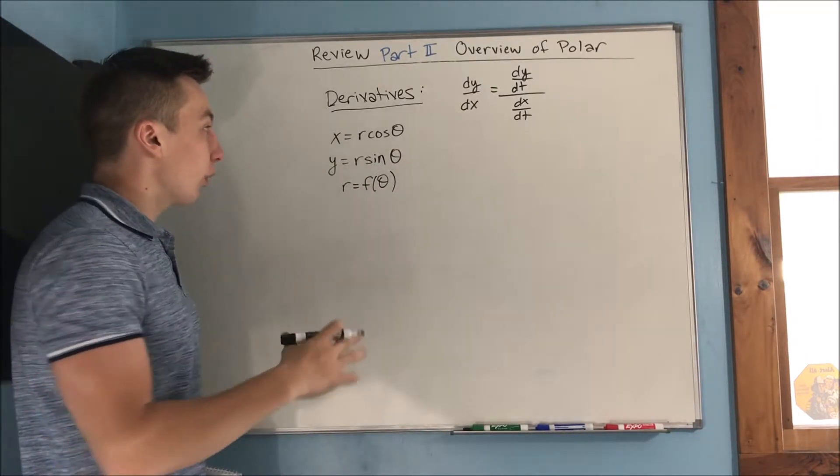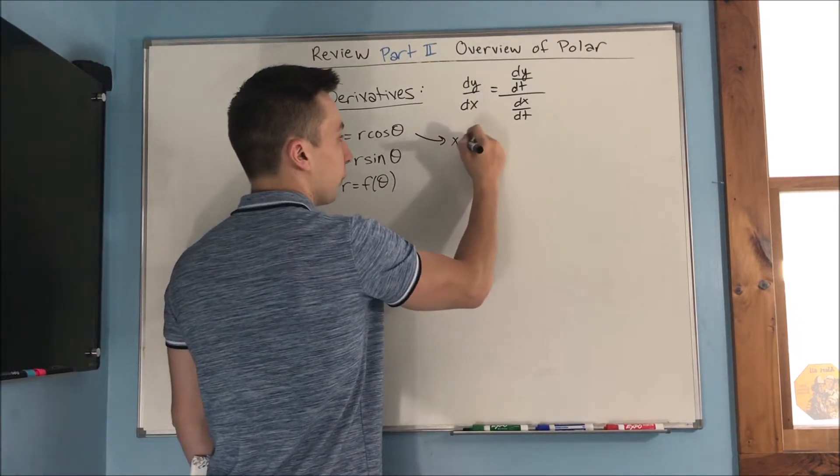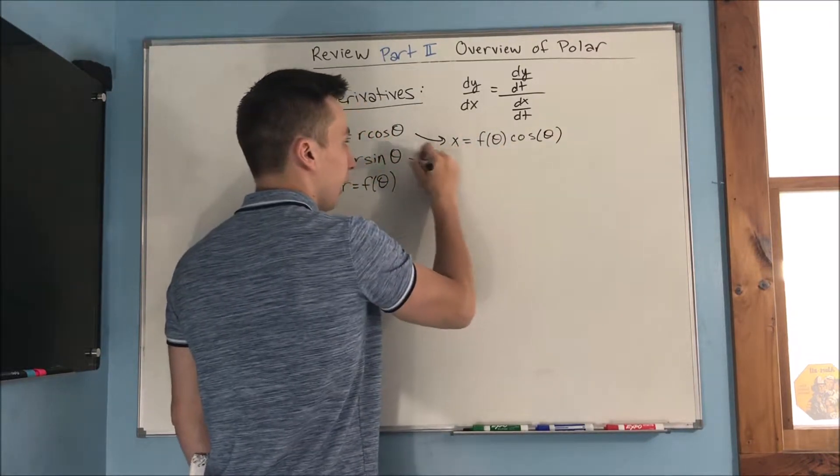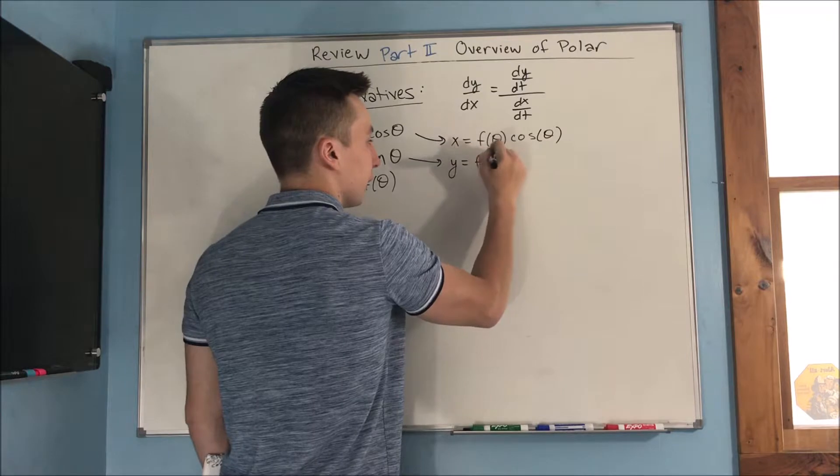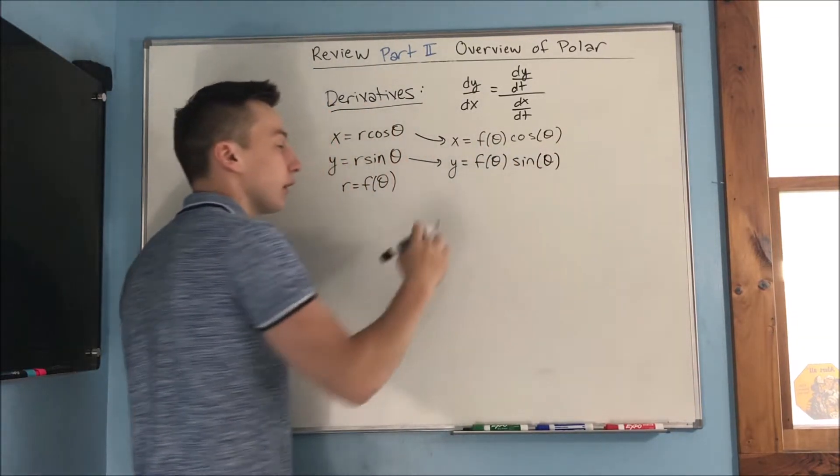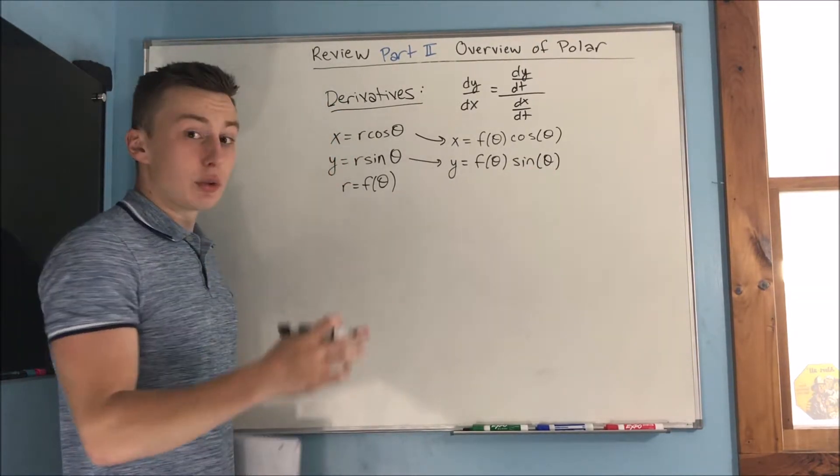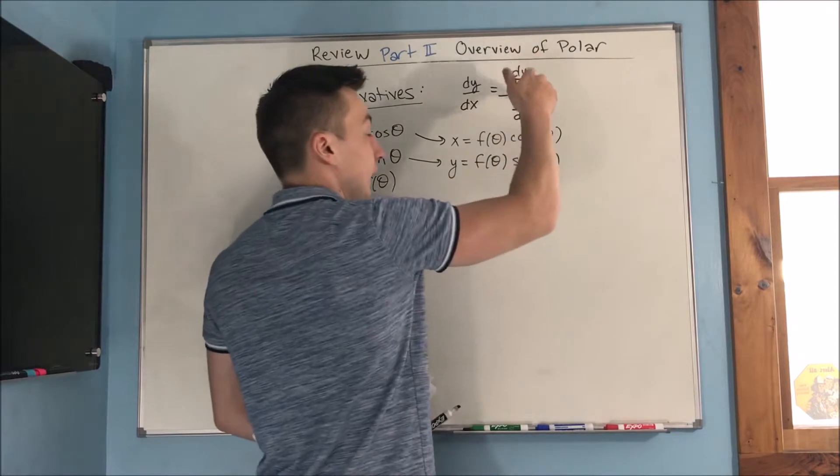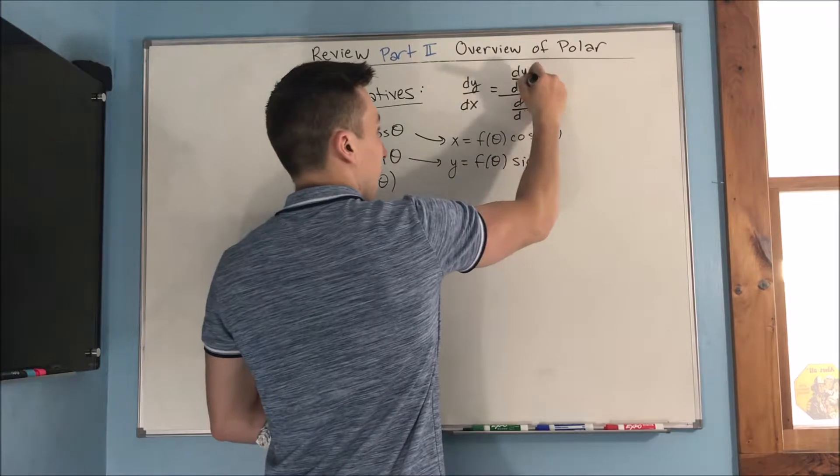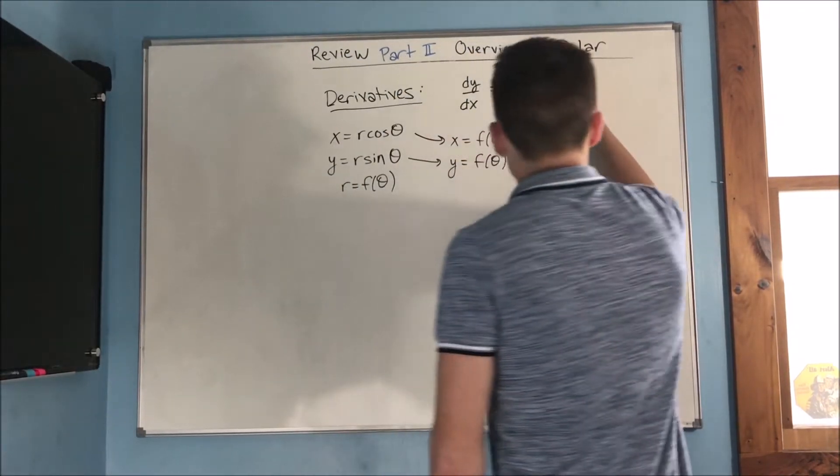So, we can rewrite these two equations as x equals a function of theta times cosine of theta and y equals a function of theta times sine theta. Now, these are completely in terms of theta, so you can take the derivative, and instead of having dy/dt, dx/dt, you have dy/dθ over dx/dθ. That's going to be your parameter. And that gives you your derivative formula.